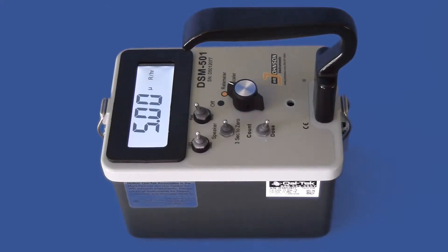This video shows you how to operate the DSM-501 microroentgen meter. This meter is used to survey gamma and x-ray at the microroentgen level. The range is 1 microroentgen per hour to 10 milliroentgen per hour.